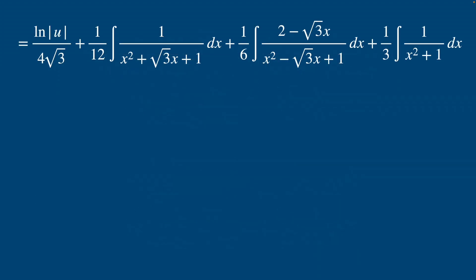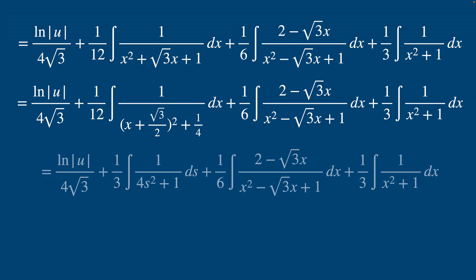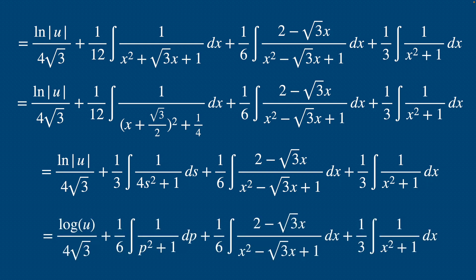And so for our second integrand here, we just complete the square like so. And now substitute in s for x plus root 3 over 2. So ds is dx and factor 1 fourth from the denominator, and then substitute in p for 2s. And so dp is 2ds. So then we get arctan for that and our rightmost guy as well.